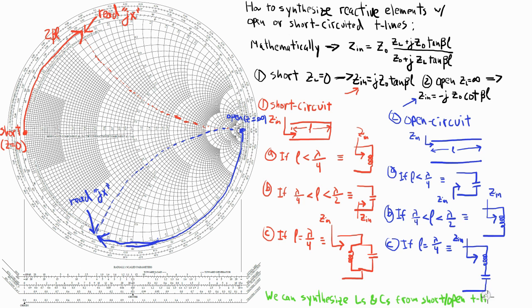So to summarize, we found that we can synthesize inductors and capacitors from just short or open-ended transmission lines. This is a very useful feature of microwave transmission line theory.